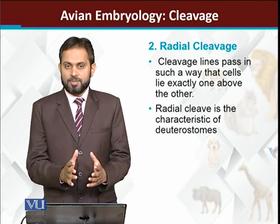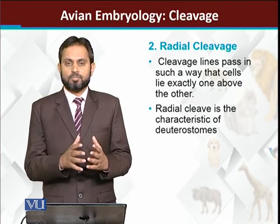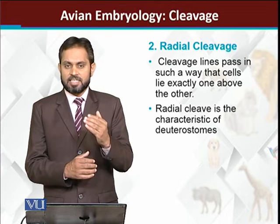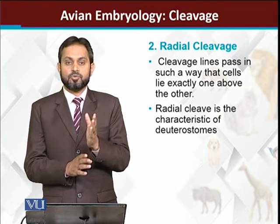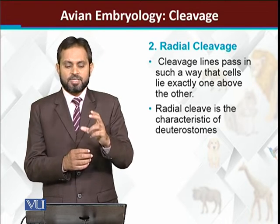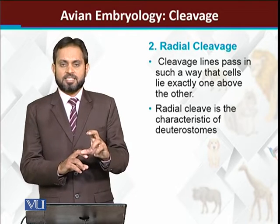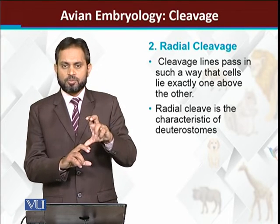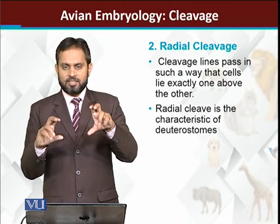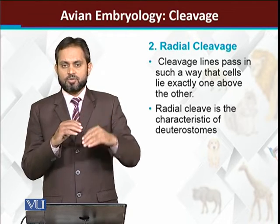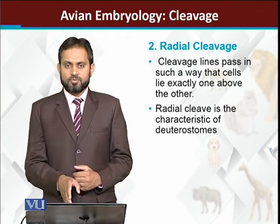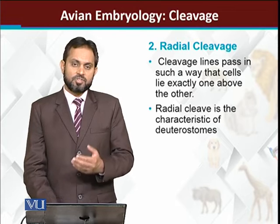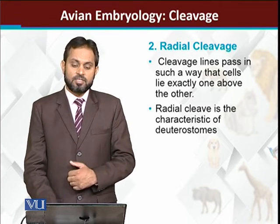Radial cleavage — एम्फीबिअन और birds में जो plan of cell division है, जो cells की alignment है और spindle fibers का orientation है — radial cleavage में यह एक pattern है जो deuterostomes के अंदर पाया जाता है। इसमें lower tier of cells के उपर upper tier of cells बिलकुल exactly एक दूसरे के उपर मौजूद होती हैं — cleavage line equally upper and lower tiers को pass करती है। यह deuterostomes की property है, और birds actually deuterostomes का ही part हैं।